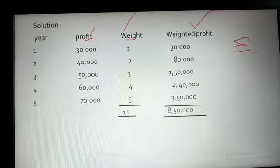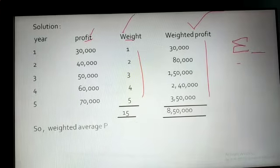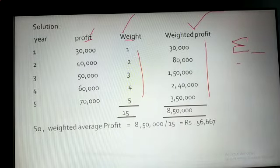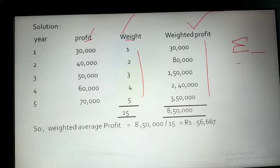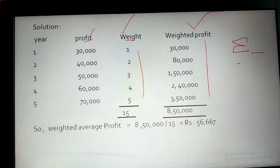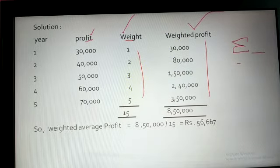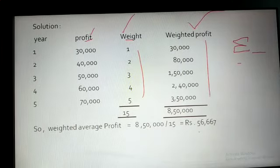The weighted average profit is total weighted profit divided by the weighted number of years. When we use simple average, we write simply the number of years, but in the weighted average method, we write the weighted number of years. So the weighted average profit comes out to 56,667.